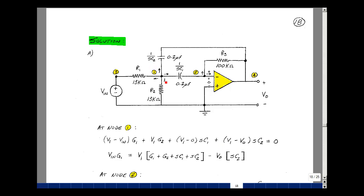The current in this capacitor is V1 minus V2, but V2 is equal to zero, divided by 1 over SC1, or just times SC1.